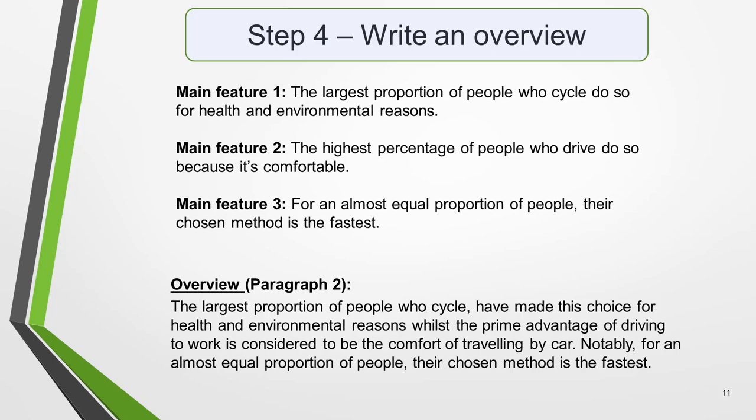For example, our overview could read, the largest proportion of people who cycle have made this choice for health and environmental reasons. Whilst the prime advantage of driving to work is considered to be the comfort of travelling by car. Notably, for an almost equal proportion of people, their chosen method is the fastest.